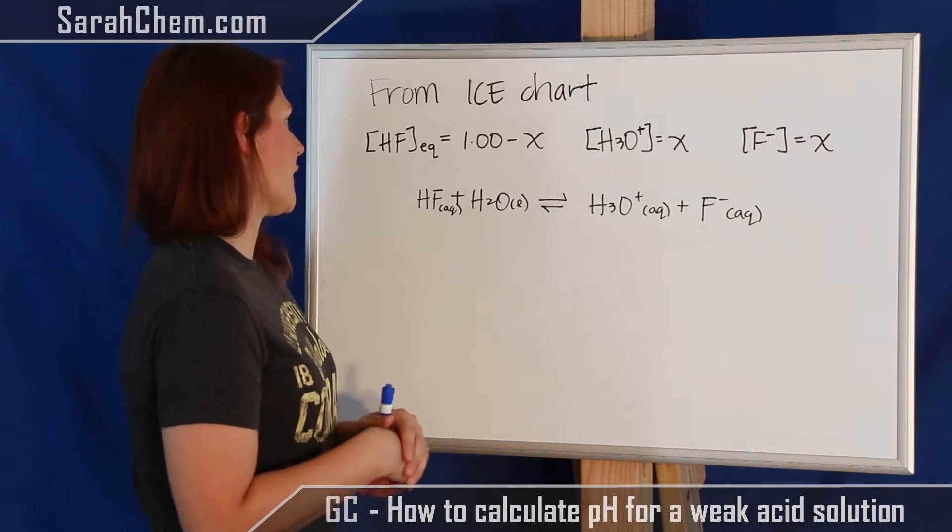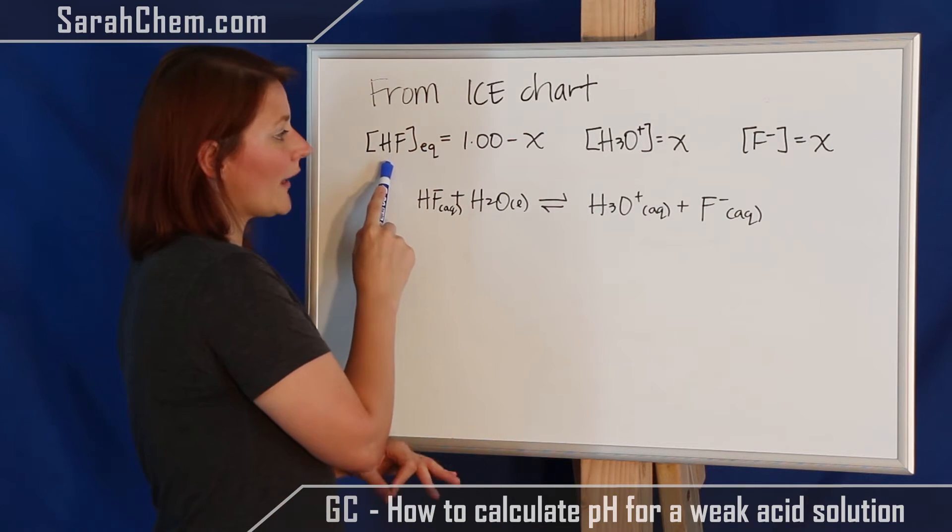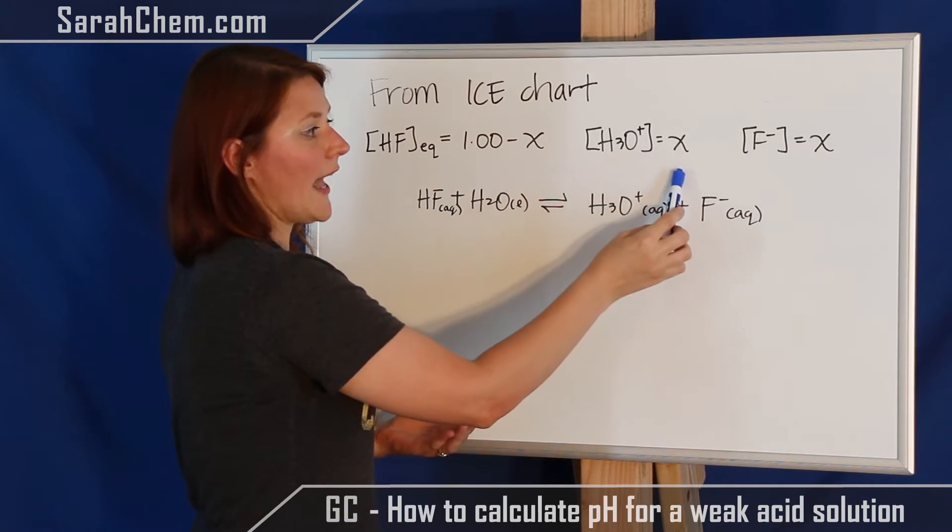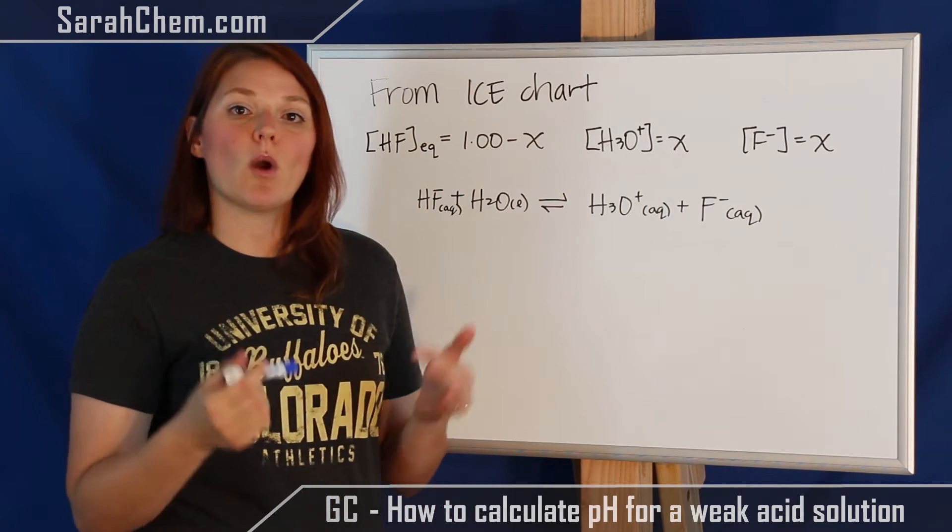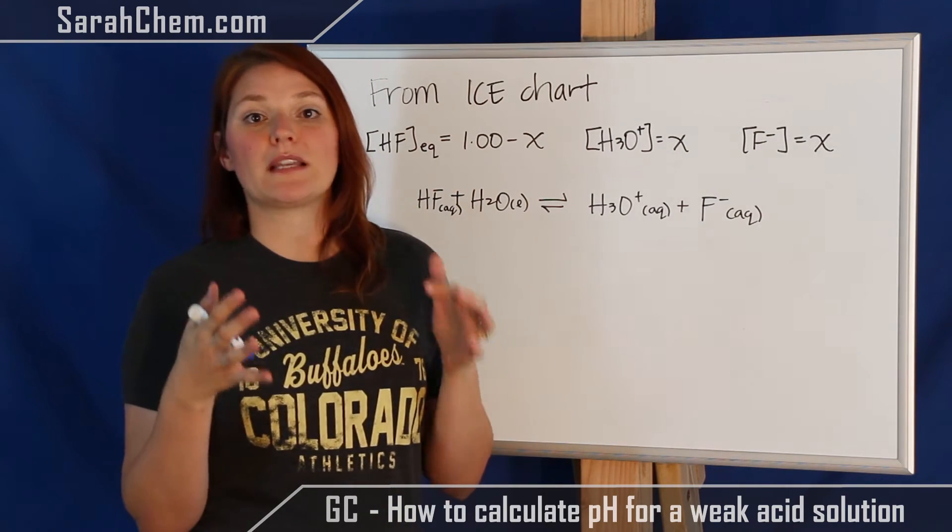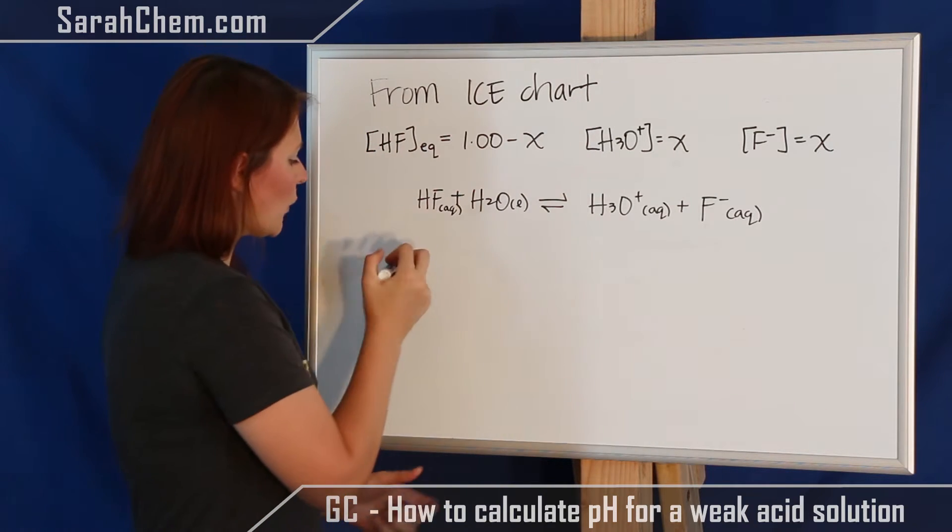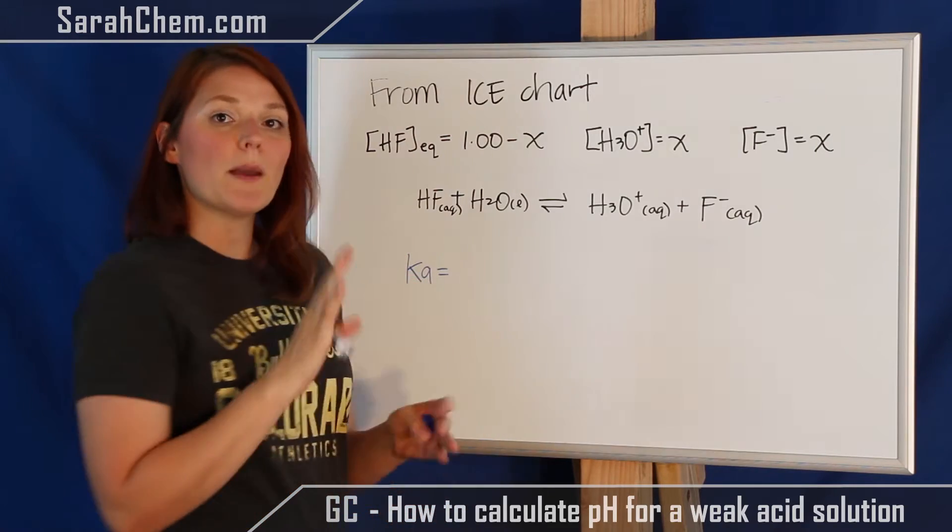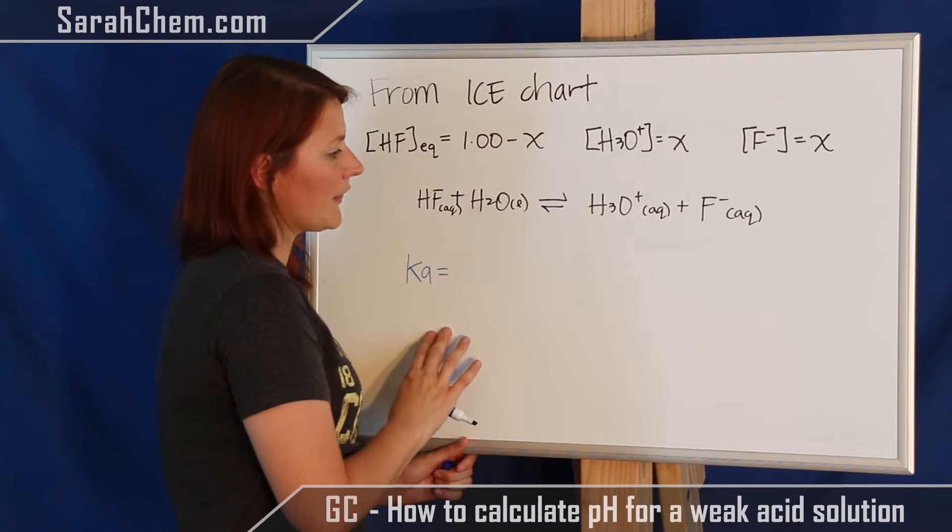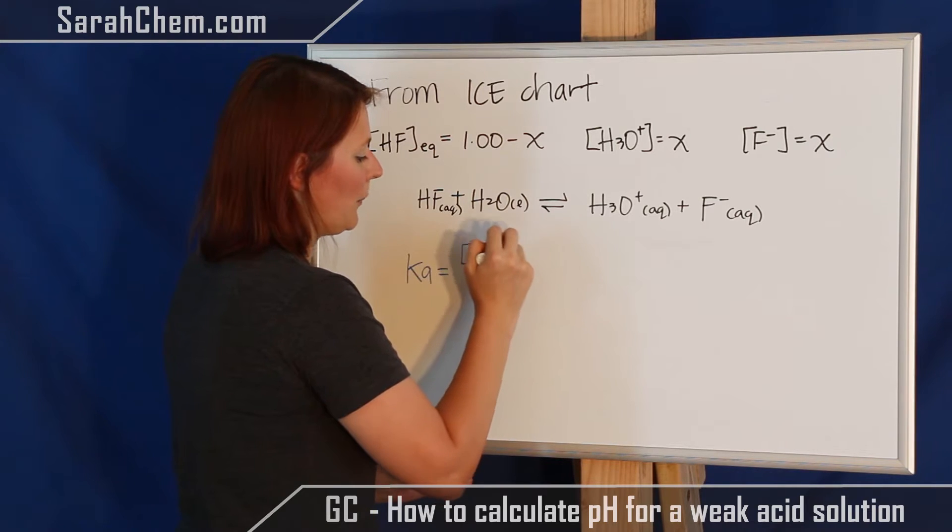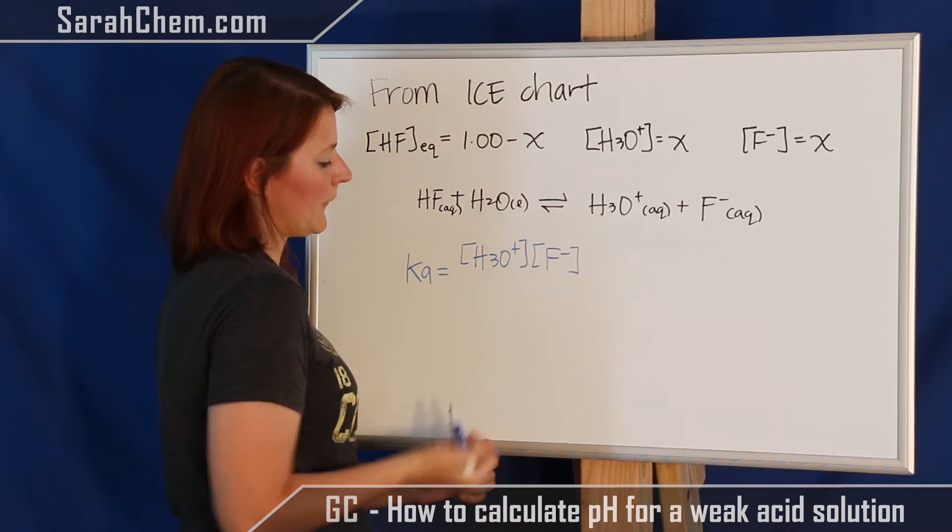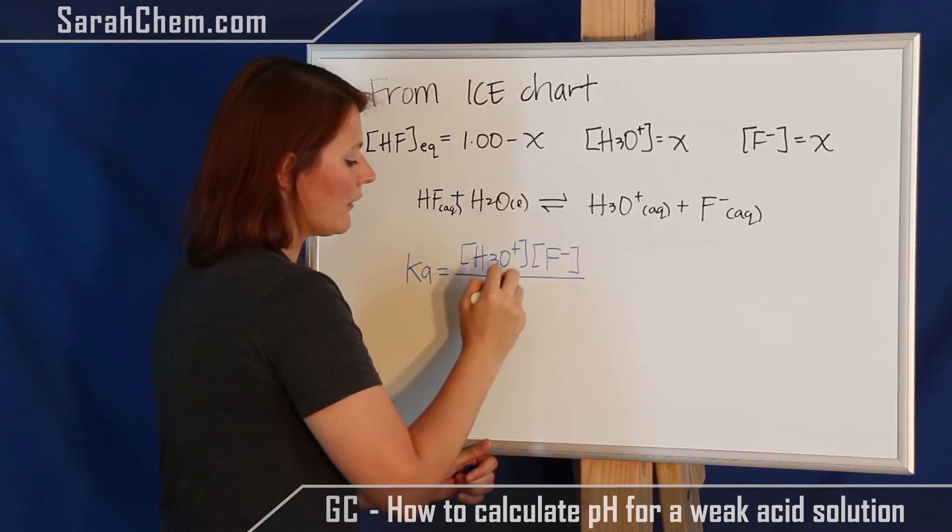So here's the data that we've pulled from the ICE chart. We know that the equilibrium concentration of HF at equilibrium is 1.00 M minus x. x we don't know yet. We know that the concentration of H3O+ formed is x, and the concentration of F- formed is x. So now what we're going to do is plug that information into the expression for Ka and solve for x, and then we'll have the number we need. So if we take a look at it, we first want to develop our expression for Ka. So now remember when we're talking about K values, it's always product concentrations over reactant concentrations. So if I take a look at this, I have the concentration of H3O+, this would be at equilibrium because we're talking about K, times the concentration of F-.